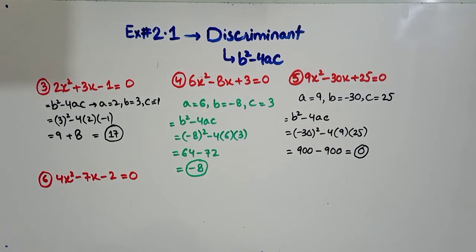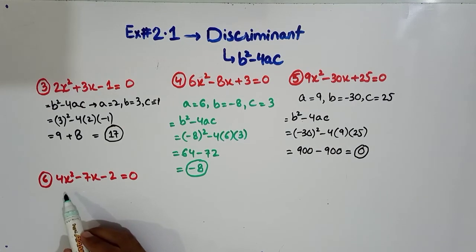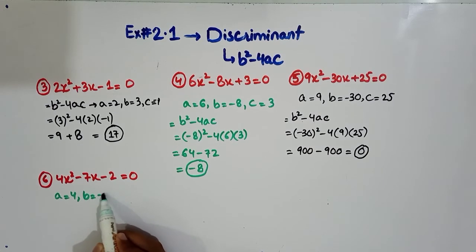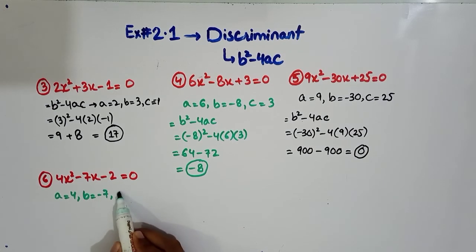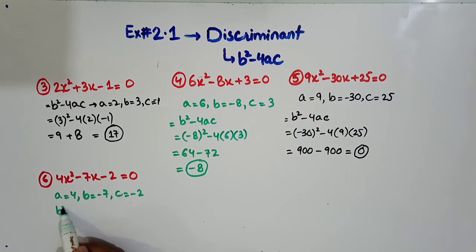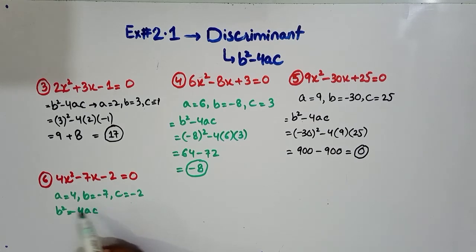Now the last question which we have is question number 6. We will attempt this. First we will write a, b, c value. We will write a value, after that we will write a discriminant formula b squared minus 4ac. We will put b to minus 7 and its square.